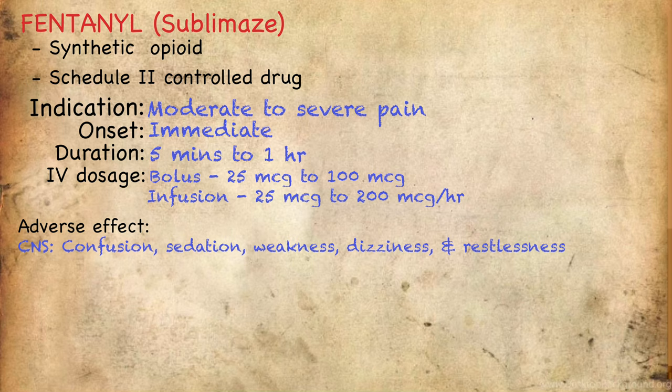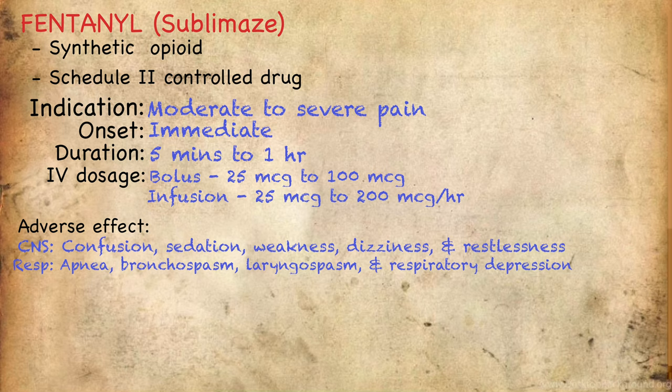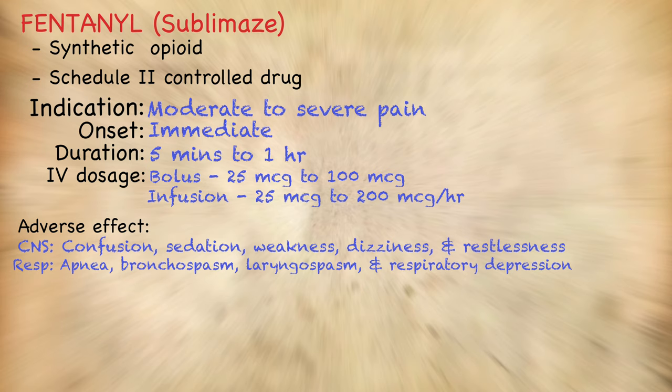For the respiratory system, fentanyl can cause apnea, bronchoconstriction, laryngospasm, and respiratory depression. Opioids like fentanyl can depress respiration by a number of mechanisms and neuronal sites of action. One example is the respiratory center in the brainstem — both hypoxic and hypercapnic responses are strongly affected by opioids and appear to be strongly mediated in the brainstem.